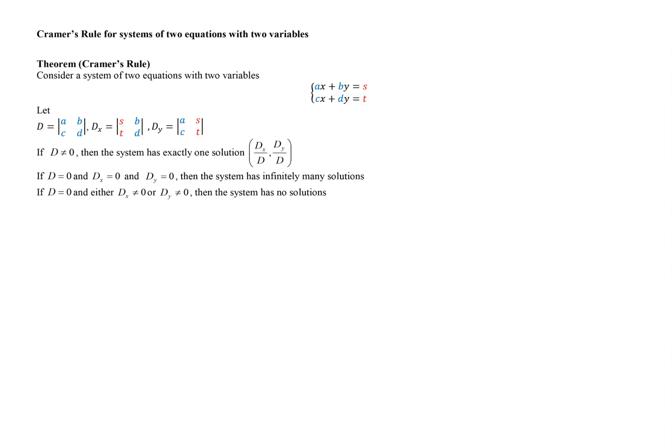If the main determinant D is zero and both D_X and D_Y are also zero, then the system has infinitely many solutions. Those solutions are represented by one of the equations, as the equations are then equivalent.